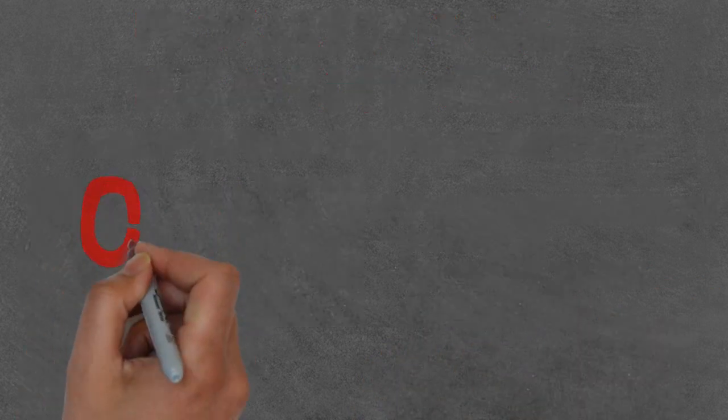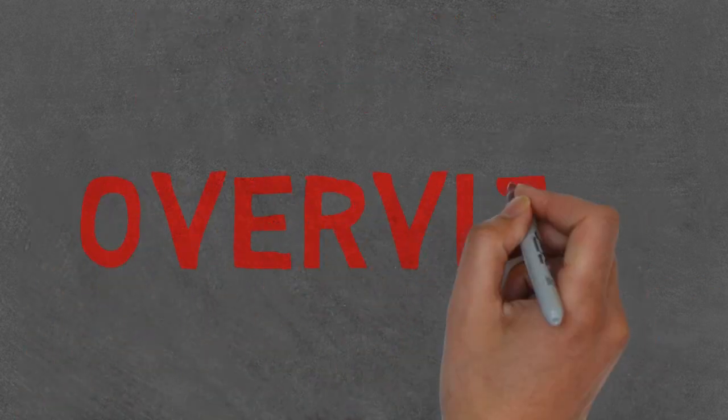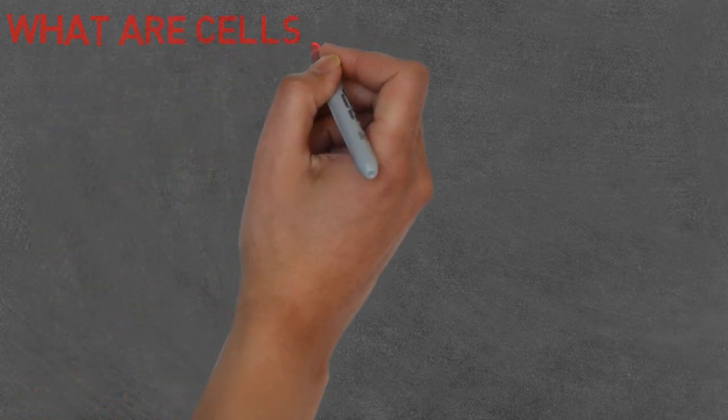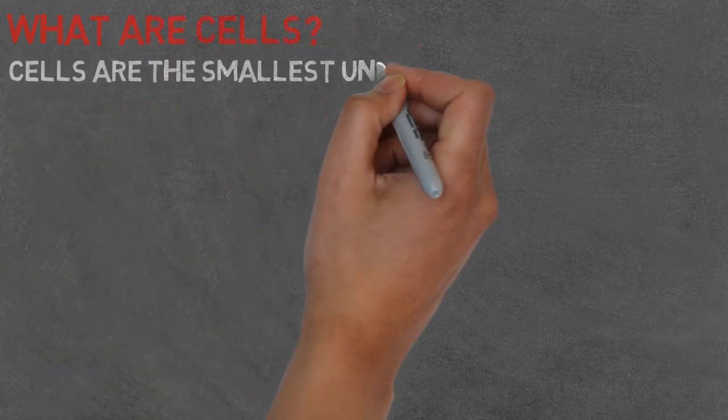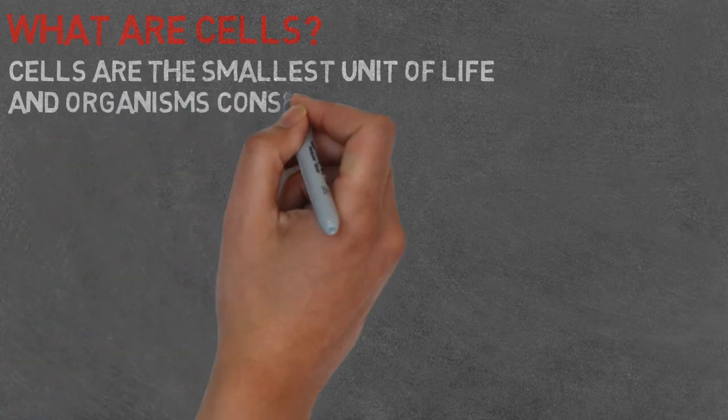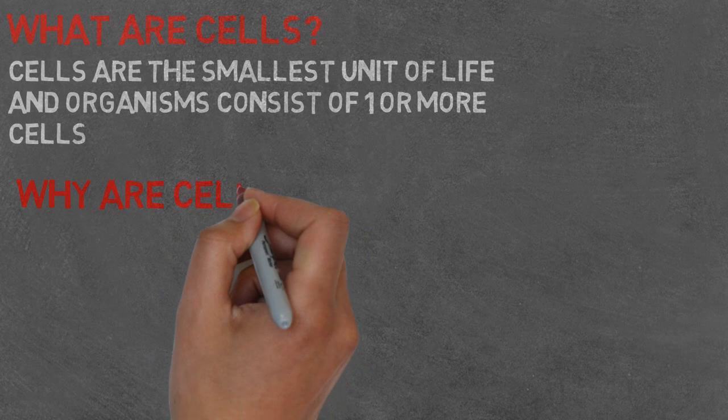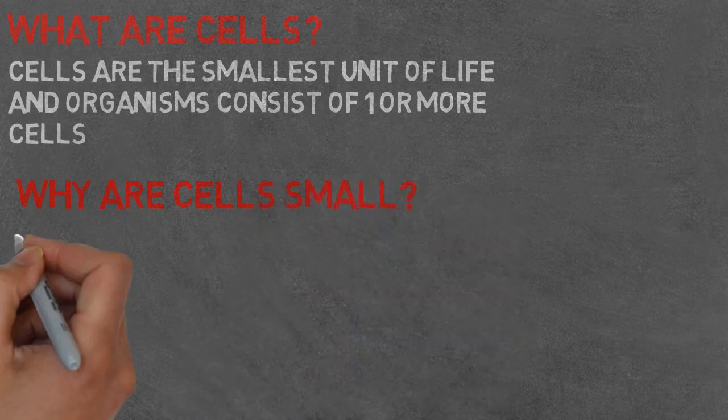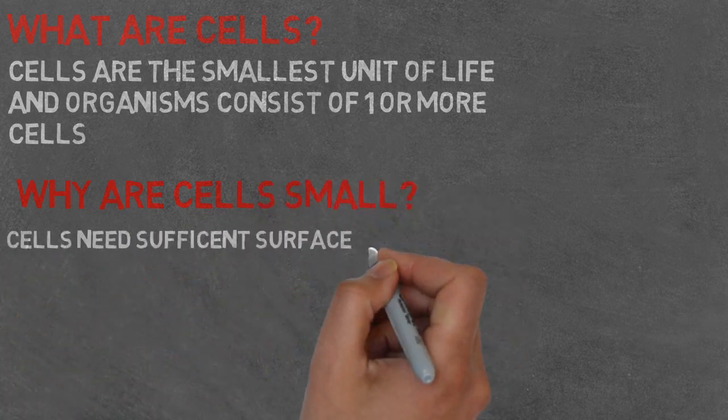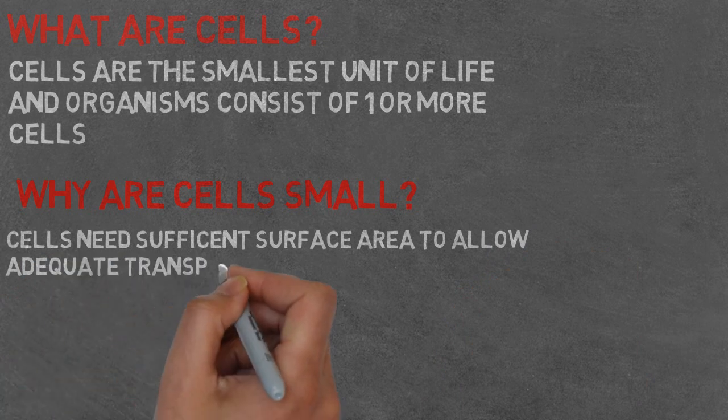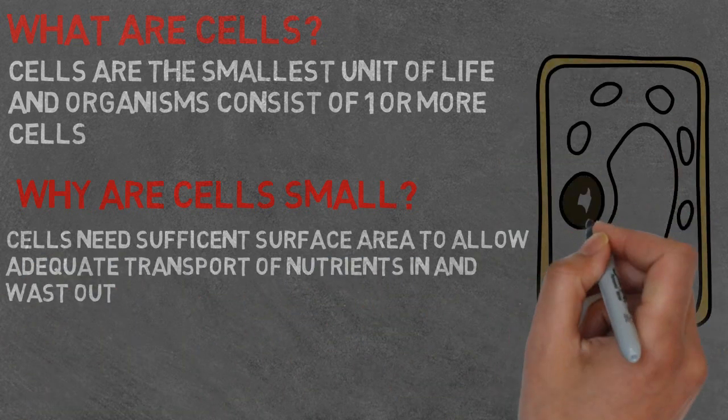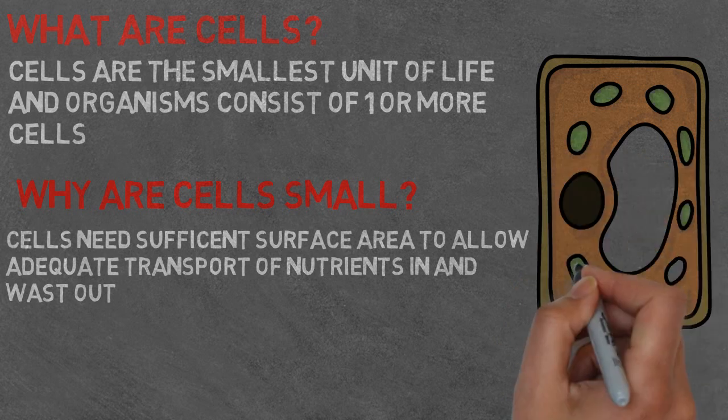An overview to see if you've all been listening. What is a cell? Cells are the smallest unit of life, and organisms consist of one or more cells. Why are they so small? Cells need sufficient surface area to allow adequate transport of nutrients in and waste out. If the cell gets too big, or the volume is too large, this can't occur sufficiently.